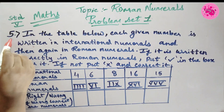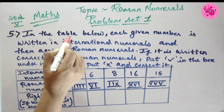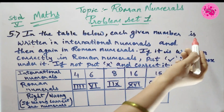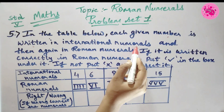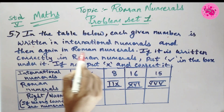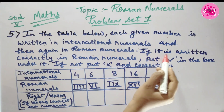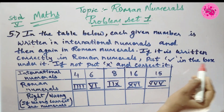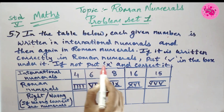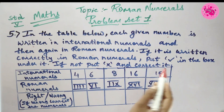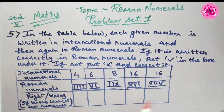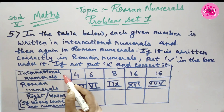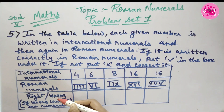Question number 5: In the table below, each number is written in international numerals and then again in Roman numerals. If it is written correctly in Roman numerals, put a tick in the box. If not, put a cross and correct it. The table shows three columns: international numerals, Roman numerals, and right or wrong — and if wrong, correct the numerals.